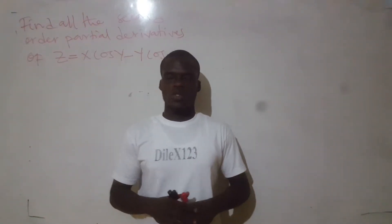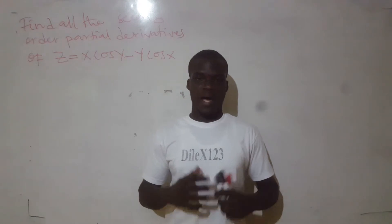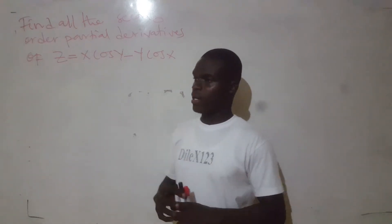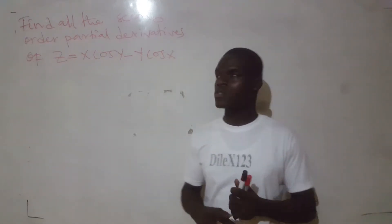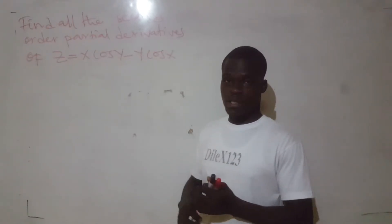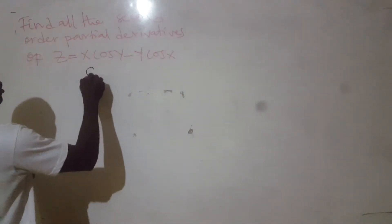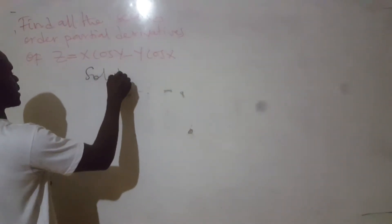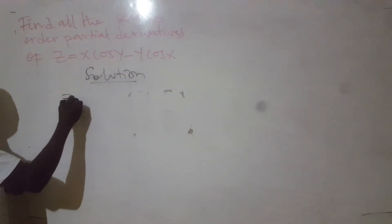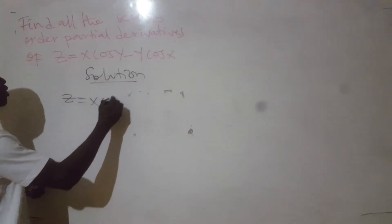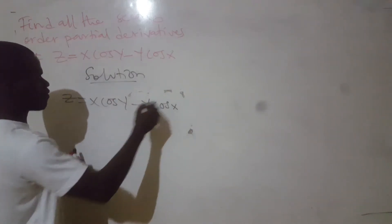Hello, welcome to another video on engineering math. Today we have to learn how to find all the second-order partial derivatives of z. So, the solution: we have z equal to x cos y minus y cos x.